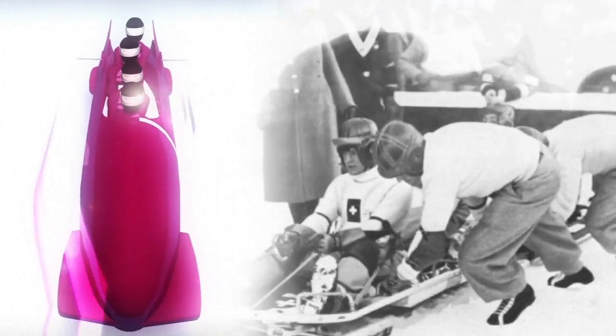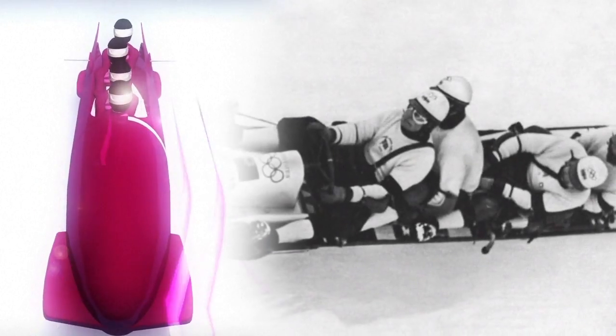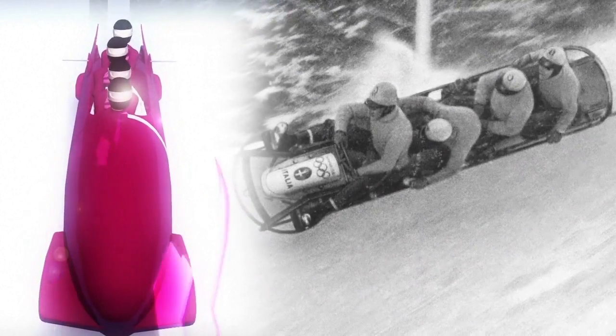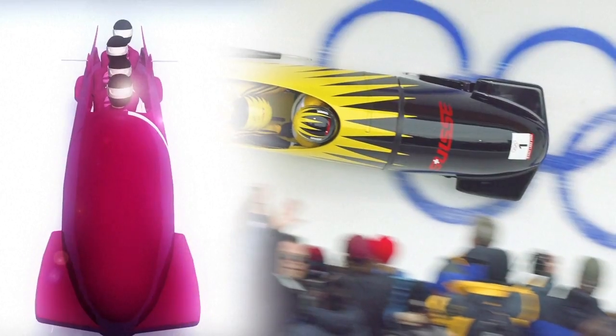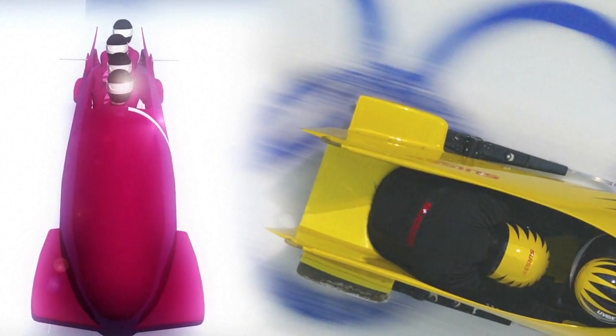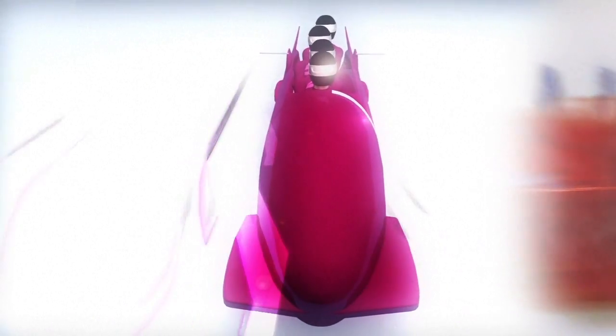Bobsleigh is an extreme sliding sport which has been part of the Winter Olympic Games since 1932 for men and 2002 for women. Average racing speeds are around 120 kilometers per hour with a maximum of some 135 kilometers per hour.